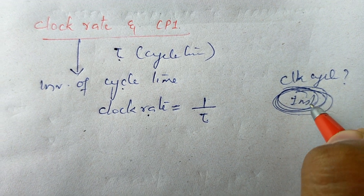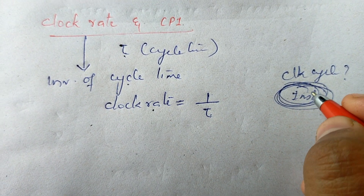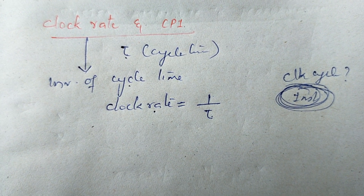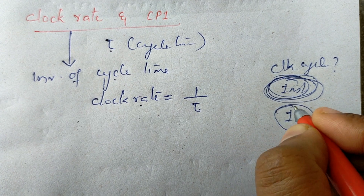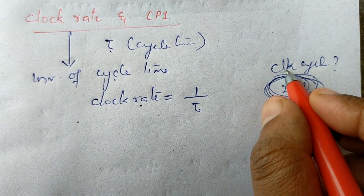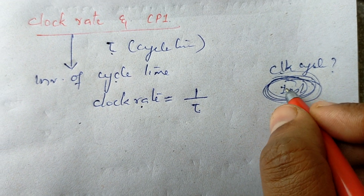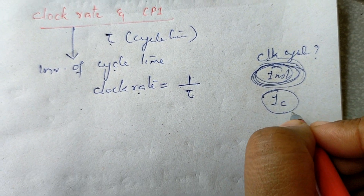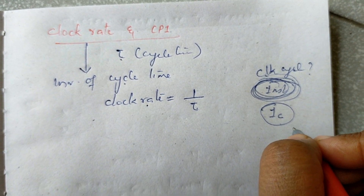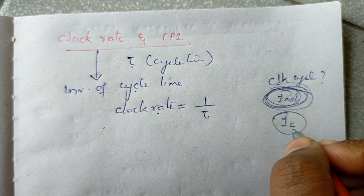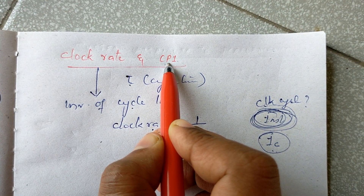One instruction executes in how many clock cycles — that is what we consider. How many instructions will be executed? That is the instruction count. If we take one instruction execution, how many clock cycles will be needed? We can then calculate the clock cycle from the instruction count array.